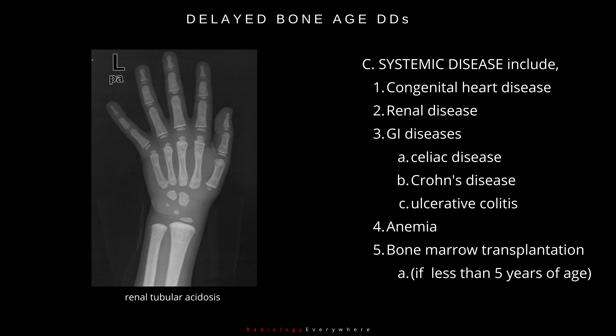Systemic diseases include: 1. Congenital Heart Disease. 2. Renal Disease. 3. GI diseases such as Celiac Disease, Crohn's Disease, Ulcerative Colitis. 4. Anemia. 5. Bone Marrow Transplantation, if less than 5 years of age.